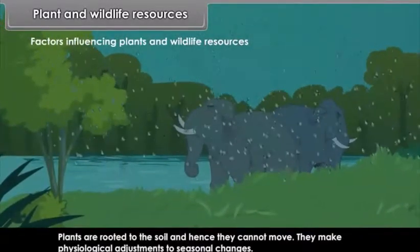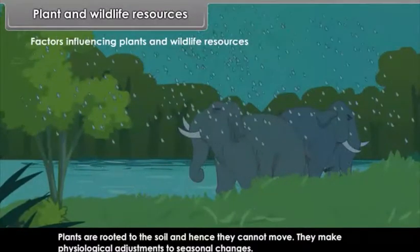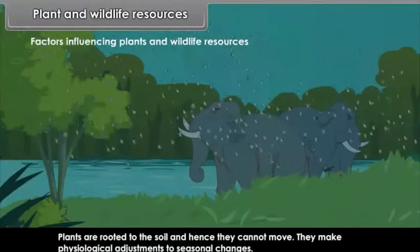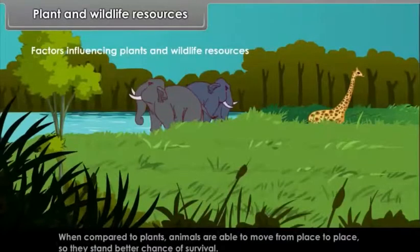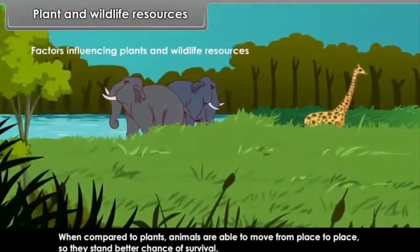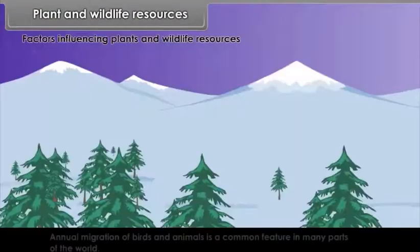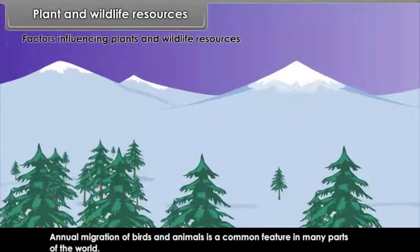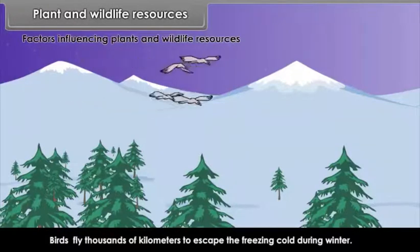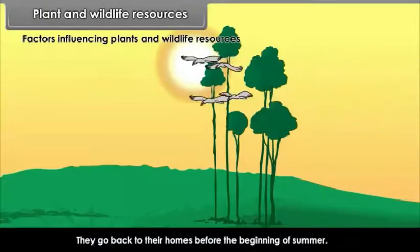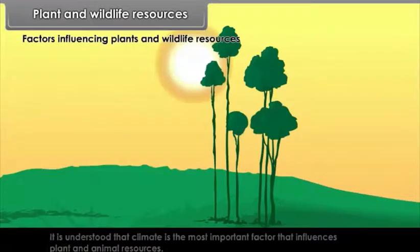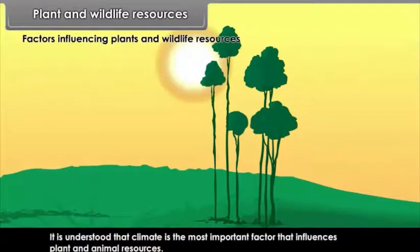Plants are rooted to the soil and hence they cannot move. They make physiological adjustments to seasonal changes. When compared to plants, animals are able to move from place to place, so they stand a better chance of survival. Annual migration of birds and animals is a common feature in many parts of the world. Birds fly thousands of kilometers to escape the freezing cold during winter and go back to their homes before the beginning of summer. It is understood that climate is the most important factor that influences plant and animal resources.